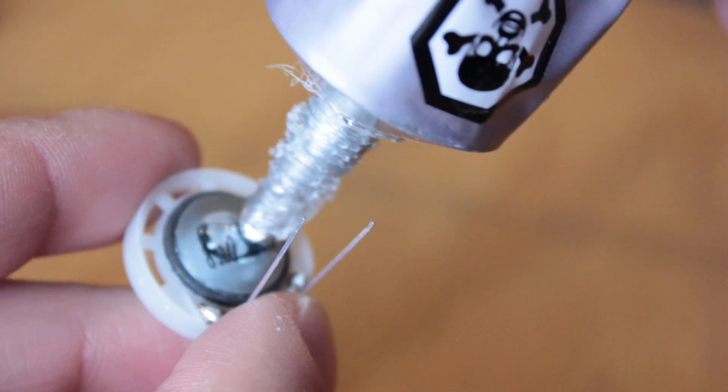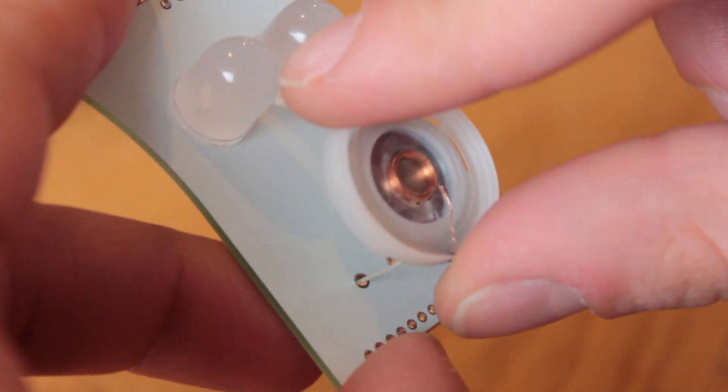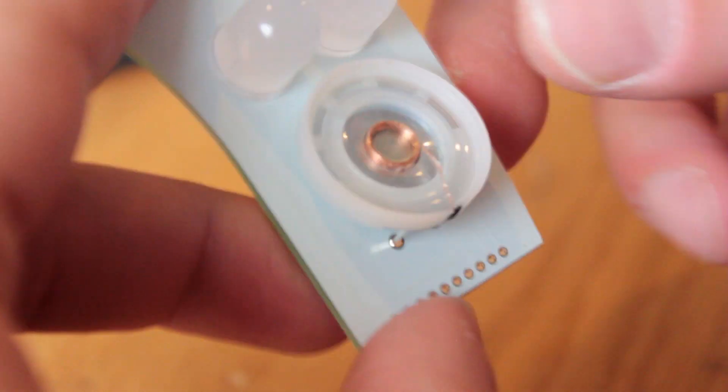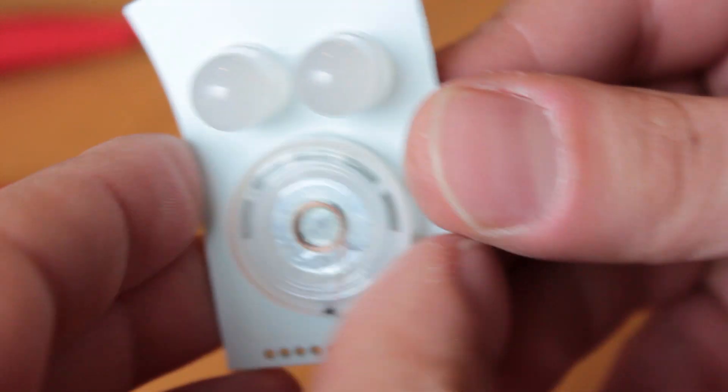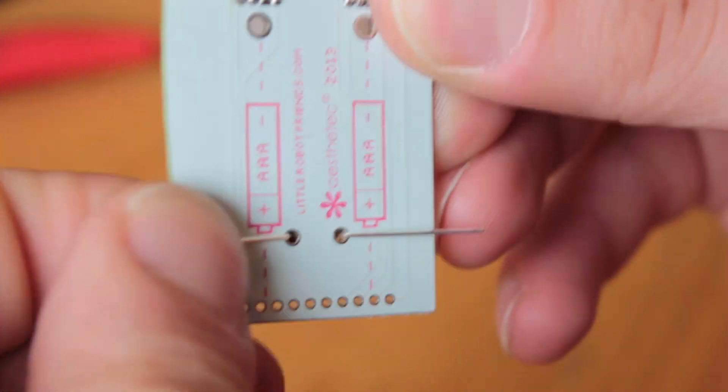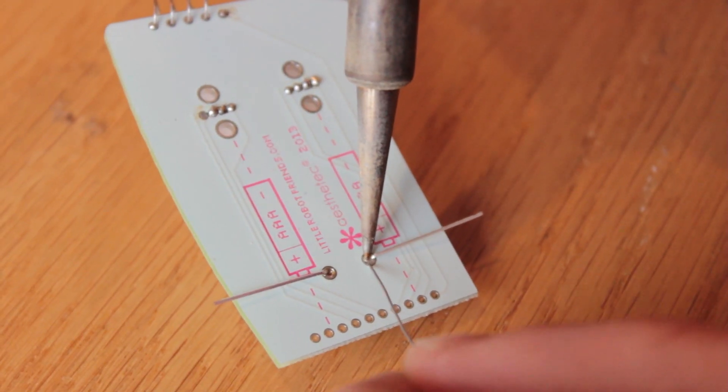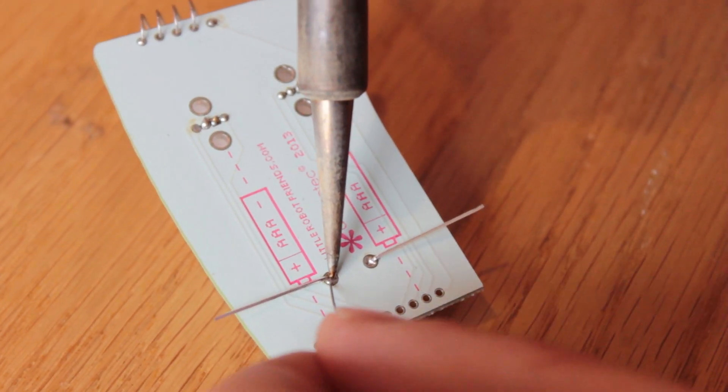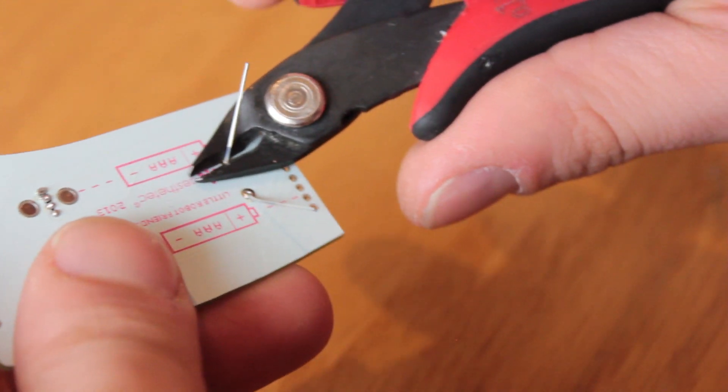Now add a dab of glue on the back, and thread the prongs through the two holes in the front, making sure the speaker is centered before you press it into place. Finally, fold over the prongs, melt solder into the holes, and snip the excess.